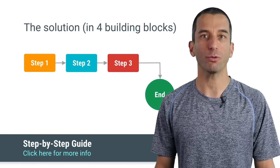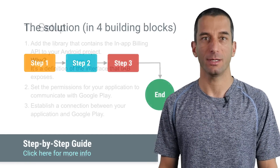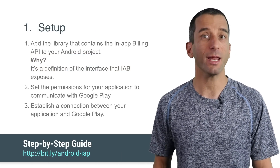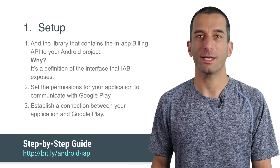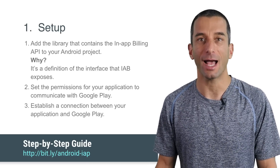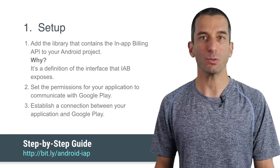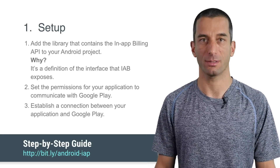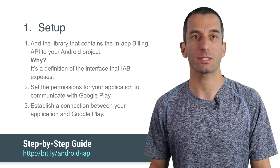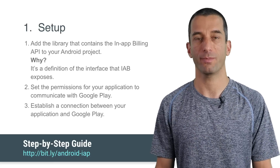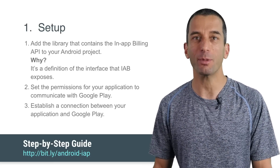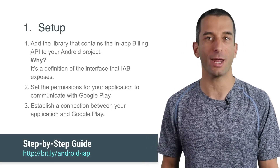So now you need to set up. Before you can start using the in-app billing service, you'll need to follow these three steps. First, add the library that contains the in-app billing API to your Android project — it's the definition of the interface that in-app billing exposes, and this will enable us to call its methods. Then, set the permissions for your application to communicate with Google Play. Last but not least, establish a connection between your application and Google Play.